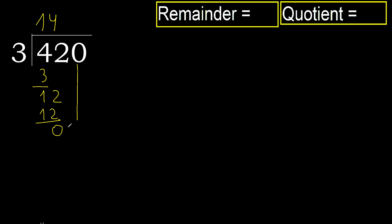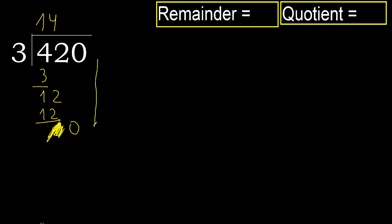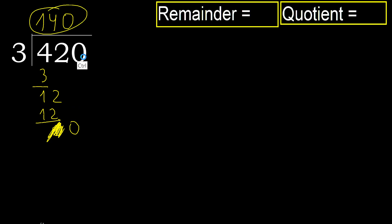Next: eliminate 0 on this side. 0 is less, therefore next — that is not a number, therefore finish it here. Complete with 0, always complete with 0, because here finish it with this number. 420 divided by 3 is here.